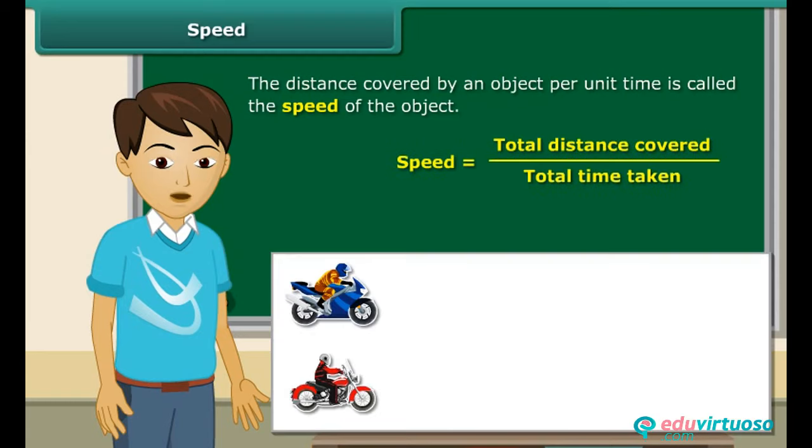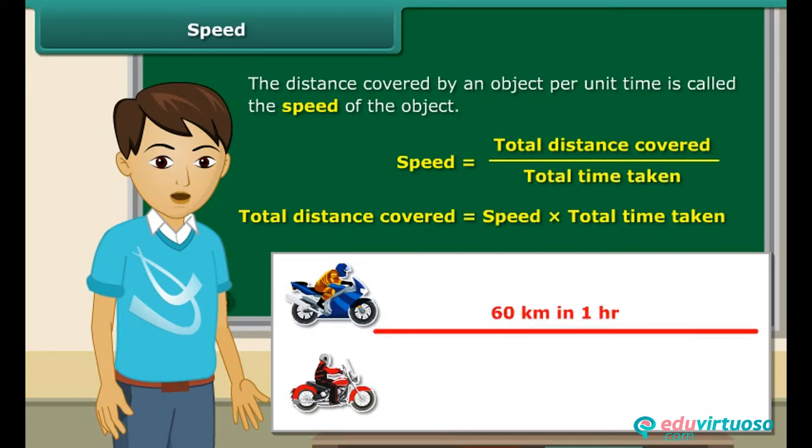Suppose your brother claims that his motorbike is faster than his friend's. His friend denies. You know that your brother's motorbike covers a distance of 60 km in an hour, whereas his friend's bike covers 40 km in one hour. Let us now check the claims of your brother and his friend.